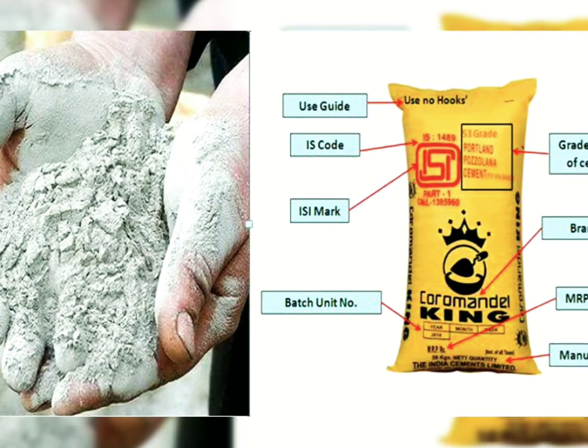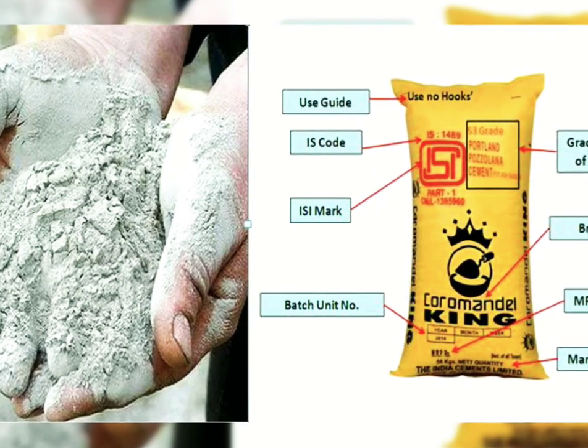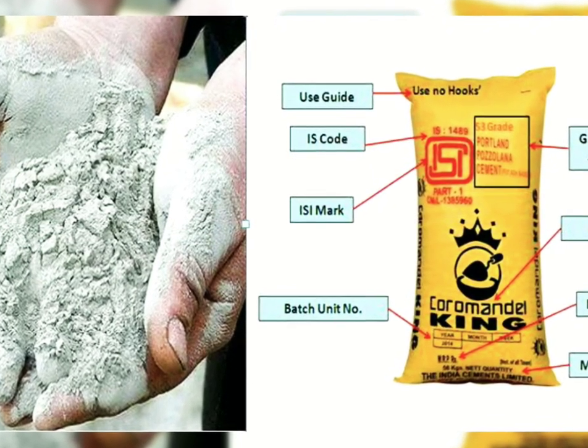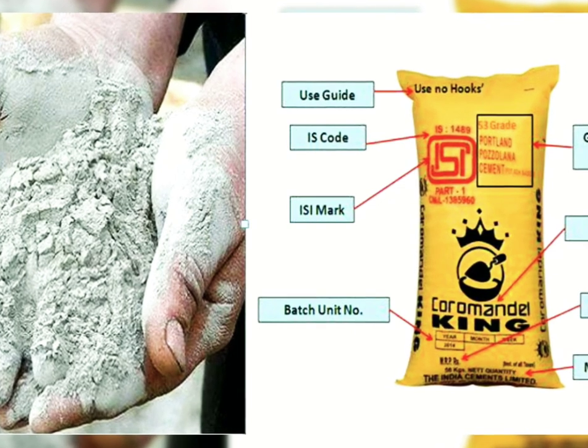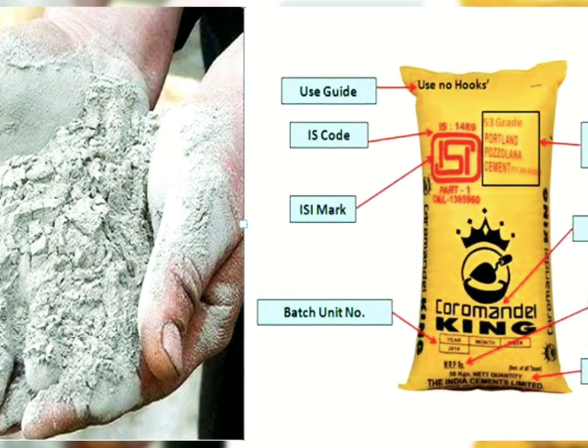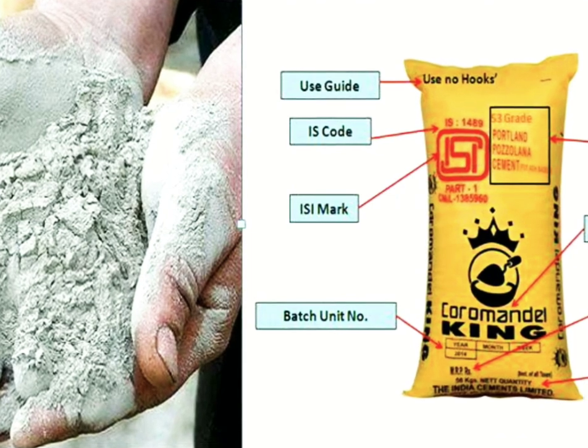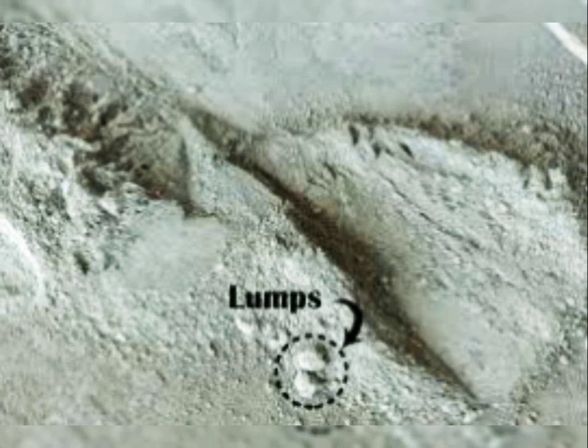The fourth test is temperature. Cement temperature should be normal and should not be hot. Whenever we take the cement in our hands, we should feel it cool and normal. If it is hot, it means the hydration process is happening in the cement, and it will be rejected.